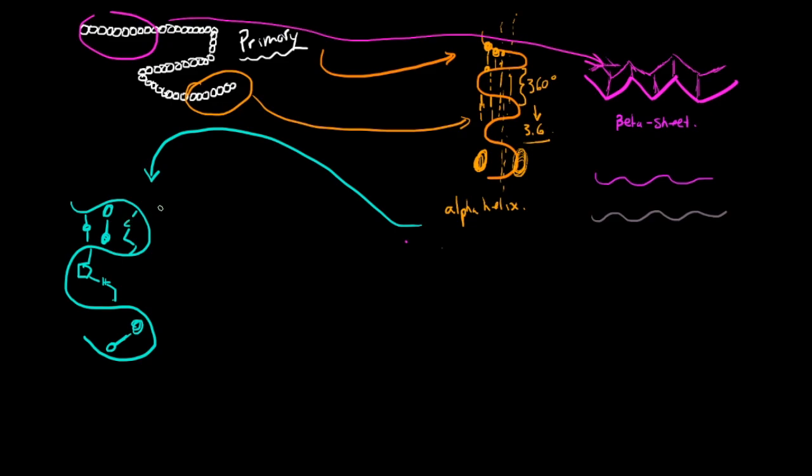So the way we determine tertiary structure is usually by either NMR spectra or the more common one is x-ray crystallography, where you shoot x-rays and determine the diffraction pattern with a computer program. So I'm going to draw a basic protein structure, what they might commonly look like in a tertiary structure that you would find from x-ray crystallography.